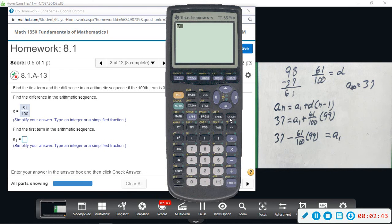I'm going to do 37 minus 61 divided by 100 times 99. So we get this. Now as a fraction, I'm going to do Math, Enter, Enter, and we get negative 2339 over 100.